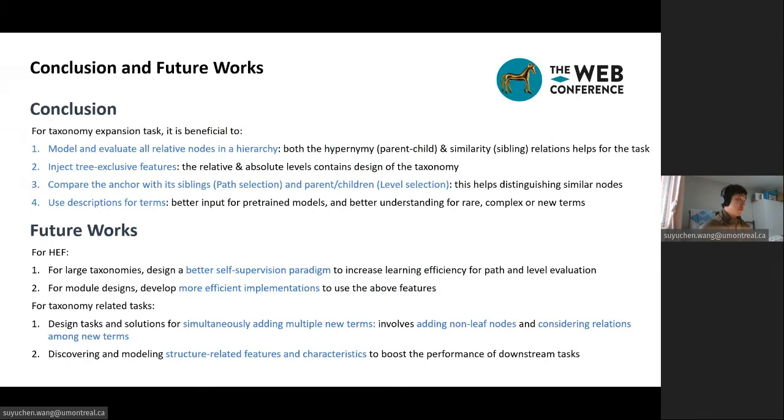For future works, for our model, for large taxonomies, we need to design a better self-supervision paradigm. And for model designs, we need to develop more efficient implementations to use the above features. For taxonomy-related tasks, we need to design tasks and solutions for simultaneously adding multiple terms involves adding non-leaf nodes and considering relations among new terms. And second, discovering and modeling structure-related features and characteristics to boost the performance of downstream tasks. And thank you, that's all.